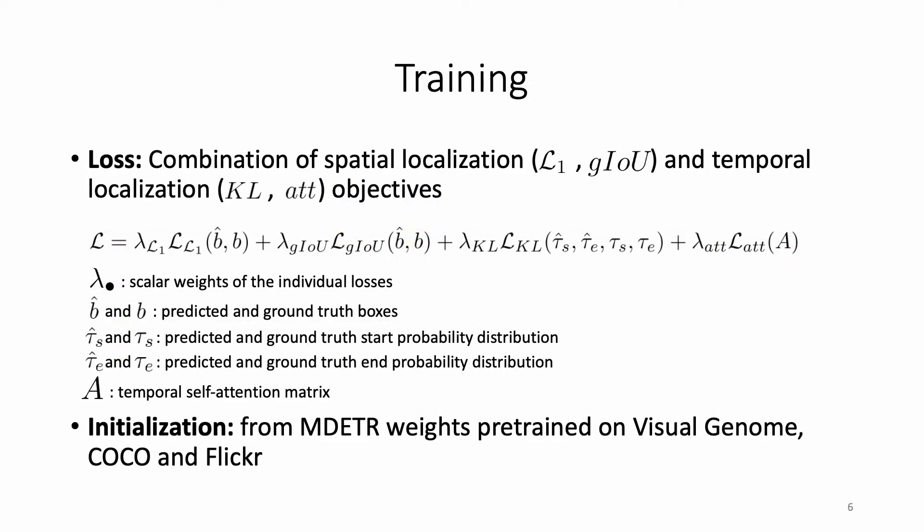To train TubeDETR on spatial-temporal video grounding annotations, we use a combination of spatial localization objectives, namely L1 loss and generalized IoU loss, and temporal localization objectives, namely Kullback-Leibler divergence loss and guided attention loss.